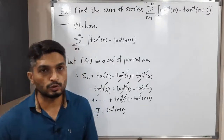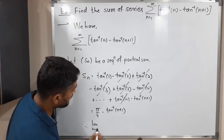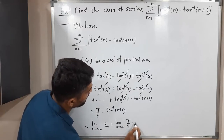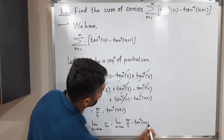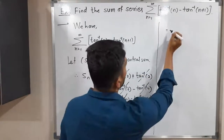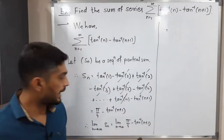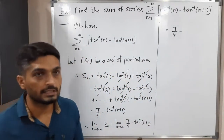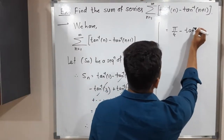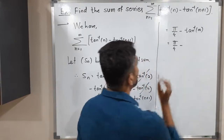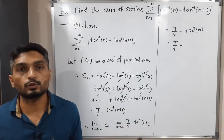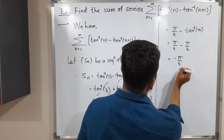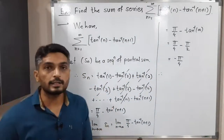So let us apply limit n tends to infinity on both sides. Therefore, limit n tends to infinity of SN is equal to limit n tends to infinity of pi by 4 minus tan inverse of n plus 1. Pi by 4 is constant, so we write it as is. Applying the limit to the next term: tan inverse of infinity plus 1, that means obviously infinity, so tan inverse infinity. We know that tan of pi by 2 is infinity, so tan inverse infinity is pi by 2. So pi by 4 minus pi by 2, which is minus pi by 4. Therefore, limit n tends to infinity of SN is equal to minus pi by 4.